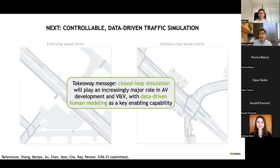So the takeaway message is that closed-loop simulation will play an increasingly important role in AV development and verification and validation. Data-driven human modeling is a key enabling capability, probably one of the largest gaps to enable simulation at scale. Other challenges include photorealistic rendering of the scene and physics simulation of the vehicle.